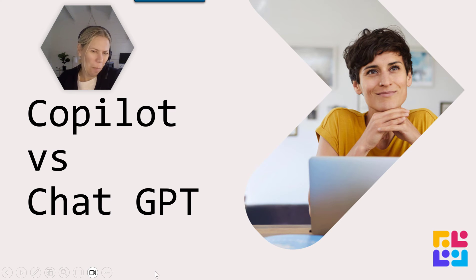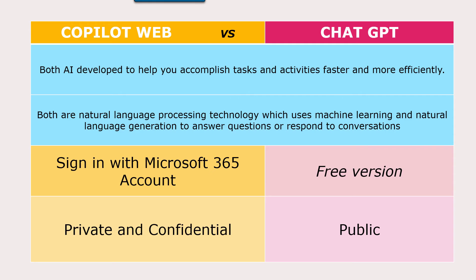So what is the difference between Copilot and ChatGPT? Let's take a quick look. I'm talking about Copilot on the web versus using ChatGPT. Both are AI developed to help you accomplish tasks and activities faster and more efficiently. Both are NLPs — natural language processing — which use machine learning and natural language so we can have conversations and fine-tune the results that we get.